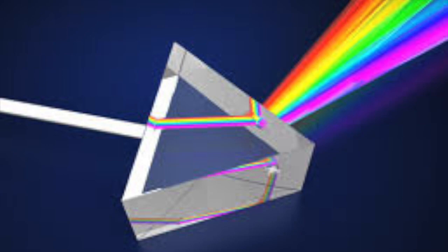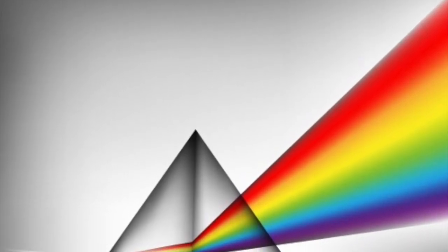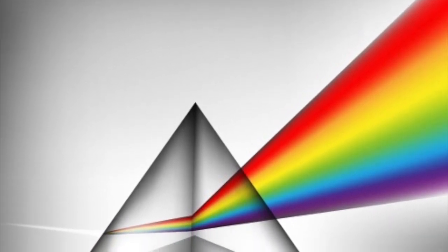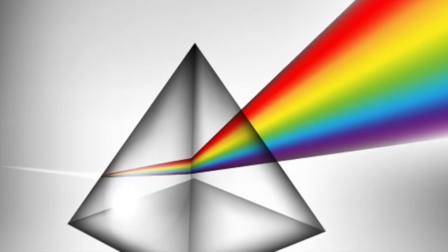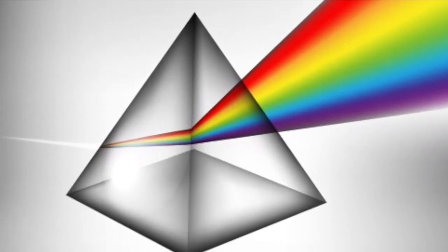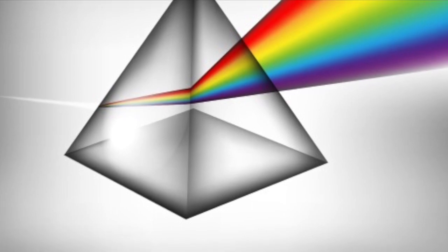Newton's discovery created a new understanding that white light is a mixture of colored light, and that each color is refracted to a different extent. These different colors correspond to light with different wavelengths and are refracted to differing degrees.